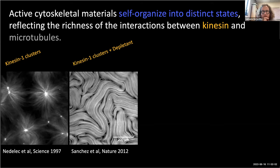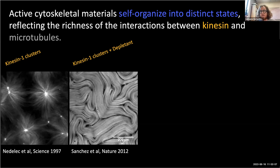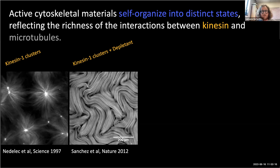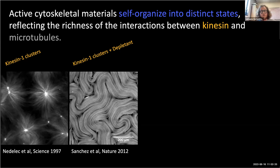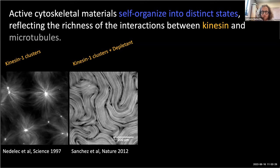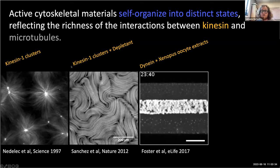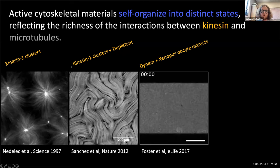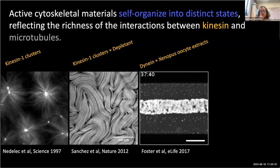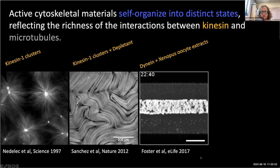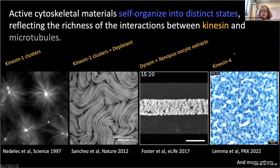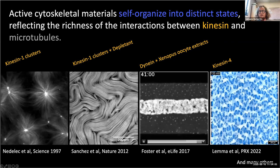For example, work done by Dogic in the early 2000s showed that with the same proteins — stabilized microtubules and kinesin clusters — but adding a small depletant like a PEG molecule, you get a very different organization: bundles that are extensile, forming beautiful 2D active nematics. More recently, from Harvard, using dynein and microtubules from Xenopus oocyte extracts, the entire network globally contracts at millimeter scale. And with kinesin-4 motors that end-accumulate on microtubules, yet another type of structure and dynamics emerges.